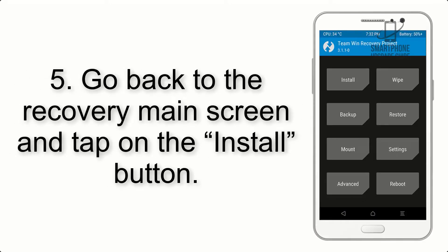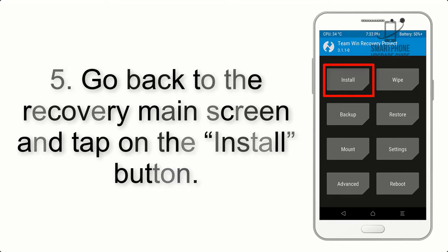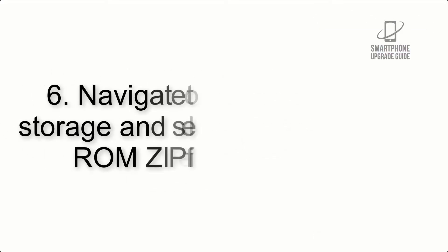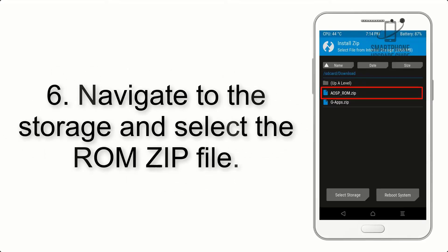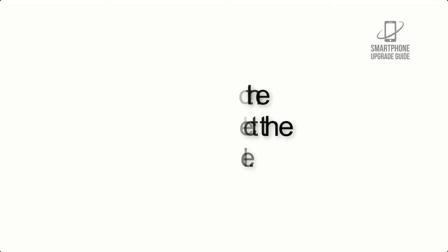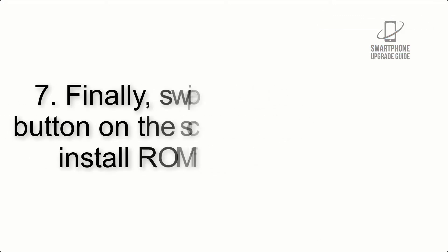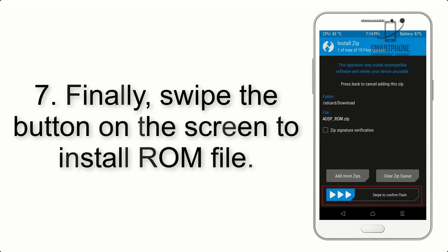Step 4: Swipe the button to wipe the device. Step 5: Go back to the recovery main screen and tap on the Install button. Step 6: Navigate to the storage and select the ROM zip file.